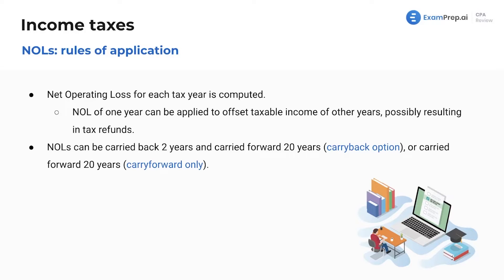The rules of application for these net operating losses — and again, you might have seen this in REG, but this is for financial purposes. Net operating loss for each tax year is computed. The net operating loss of one year can be applied to offset taxable income in other years, possibly resulting in tax refunds. You can carry these back and carry forward — carry back two years, carry forward 20 years. I would just memorize the treatments here, the number of years you can carry forward and back. This could get confusing if you just took REG, but this is specific for our corporate accounting, our financial accounting, FAR, FASB GAAP.